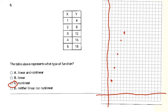Let me double-check by looking for patterns. In the X column, values go up by one each time — plus one, plus one, plus one, plus one — so there's still a pattern on the X side. On the Y side: 4 to 8 is plus 4, 8 to 12 is plus 4, 12 to 16 is plus 4, but 16 to 18 is only plus 2. That last step breaks the pattern, confirming it's nonlinear. It's always important to check all the way to the end, because it wasn't until the very last step that I found what told me it was nonlinear.